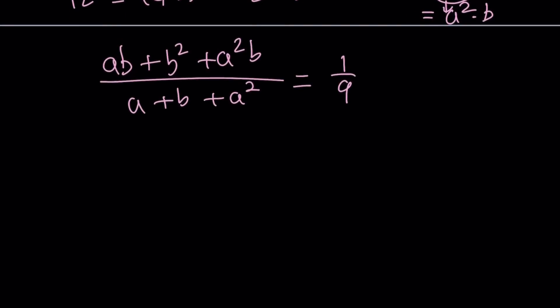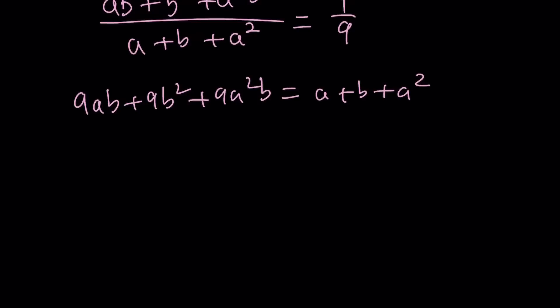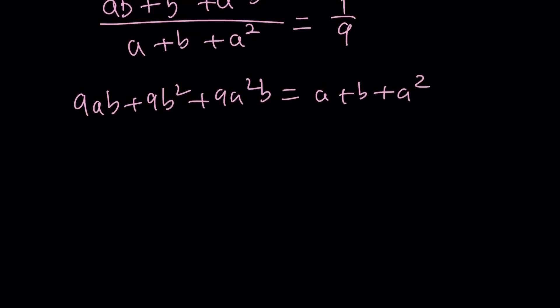Now without assuming any other things I'm just going to go ahead and cross multiply because that's the very brute forcey way of doing things. So I'm going to get 9ab plus 9b squared plus 9a squared b equals a plus b plus a squared. And then now this doesn't look very nice because nothing cancels out nothing can be combined but I'm going to put everything on the same side in order to get a 0 on the right hand side.